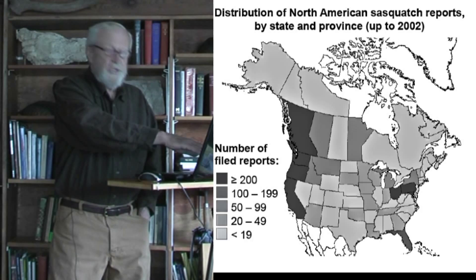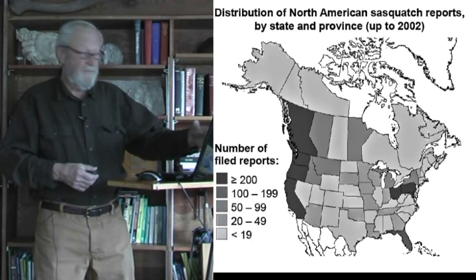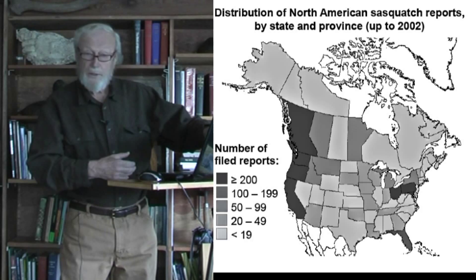As we can see, the states and provinces with the most sightings are indeed in western North America: British Columbia, Washington, Oregon, California, especially Northern California, and then the provinces and states just interior to these, and that would be Alberta, Idaho, and Montana.